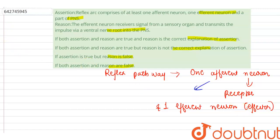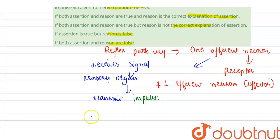Now, the afferent neuron receives signal from a sensory organ and transmits the nerve impulse via dorsal nerve root into the CNS, that is central nervous system, at the level of spinal cord.